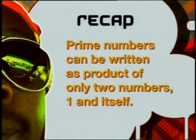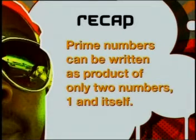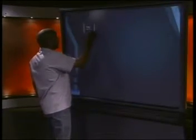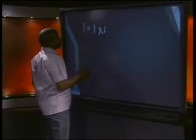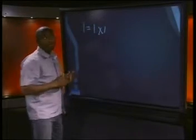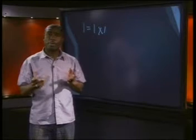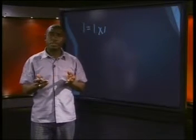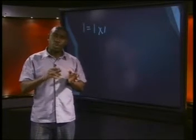Let me start by reminding you about prime numbers. They are numbers that can be written as a product of only two different factors: one and the number itself. That is why one is not a prime number, because one equals one times one — it has only one factor. Can you select all the prime numbers between one and thirty? That means numbers which do not have factors other than themselves and one.